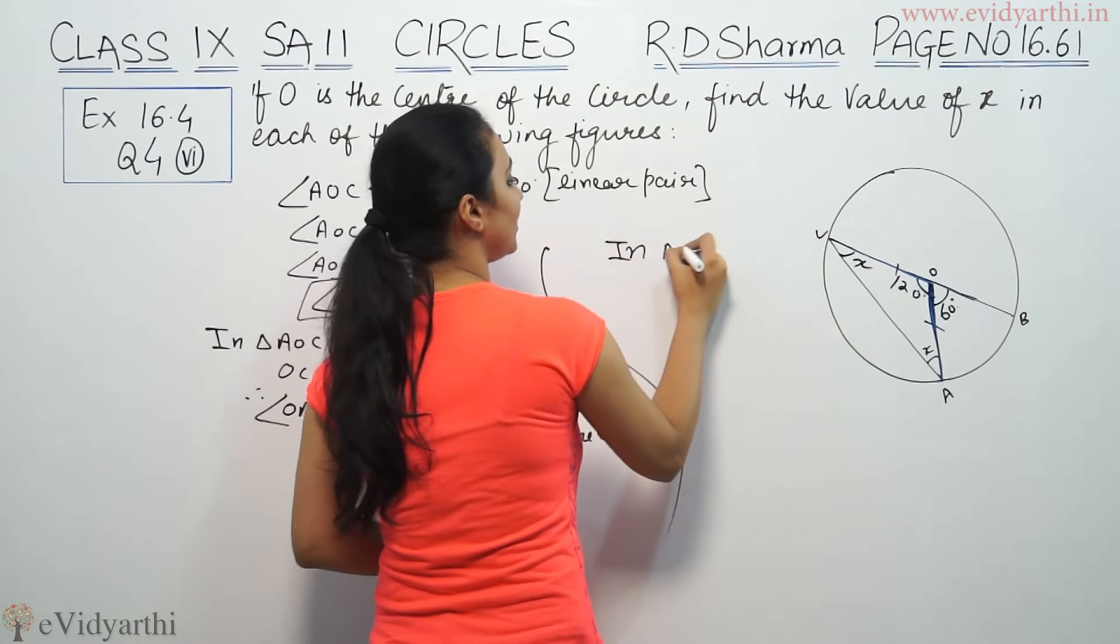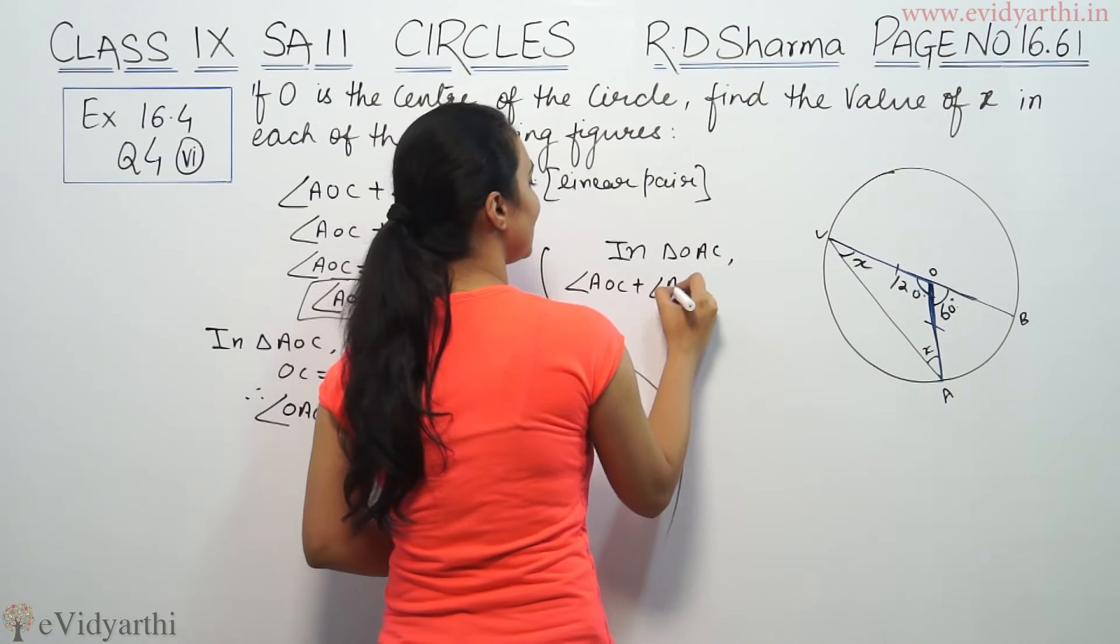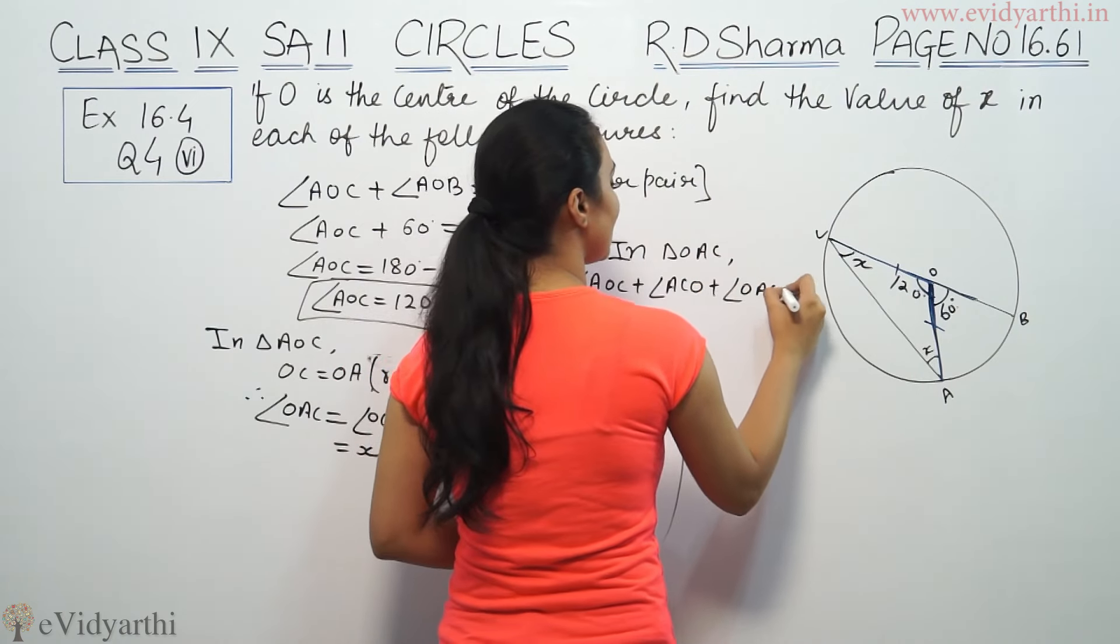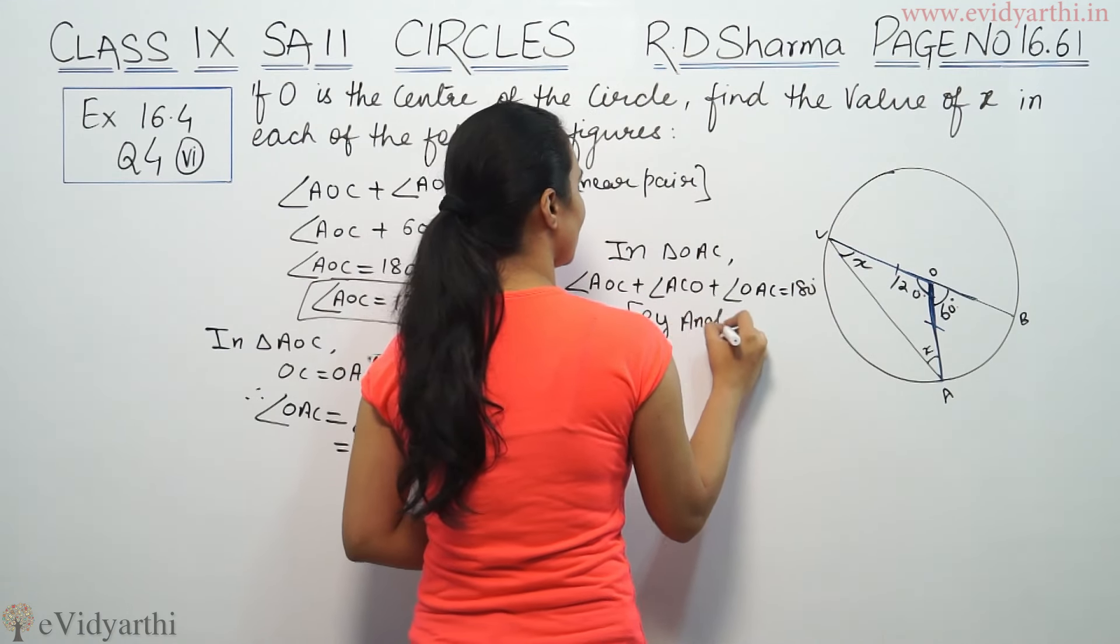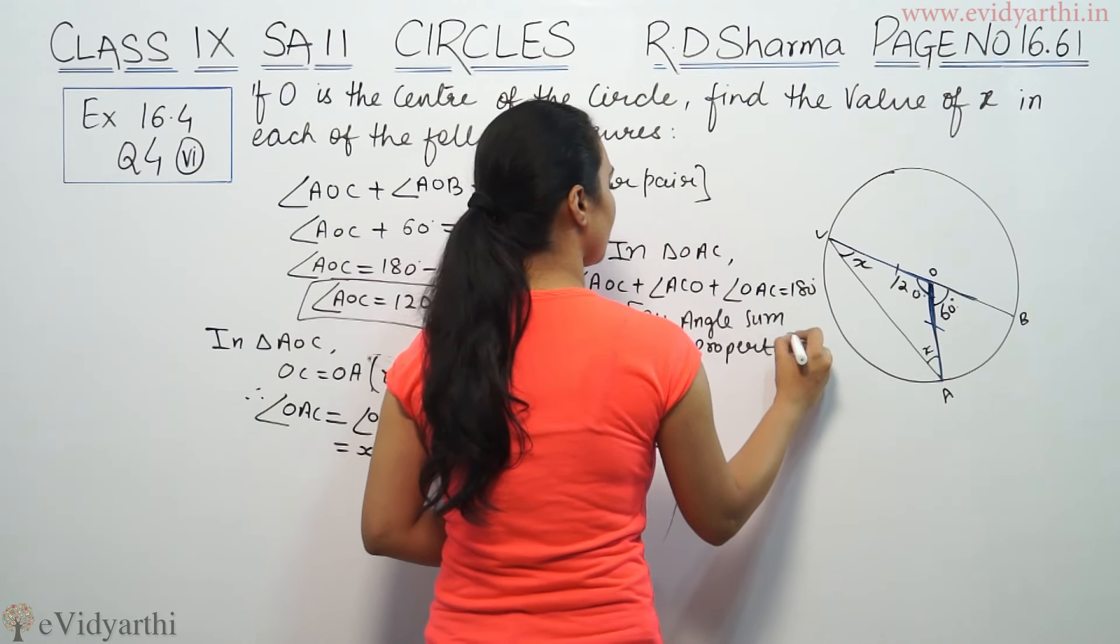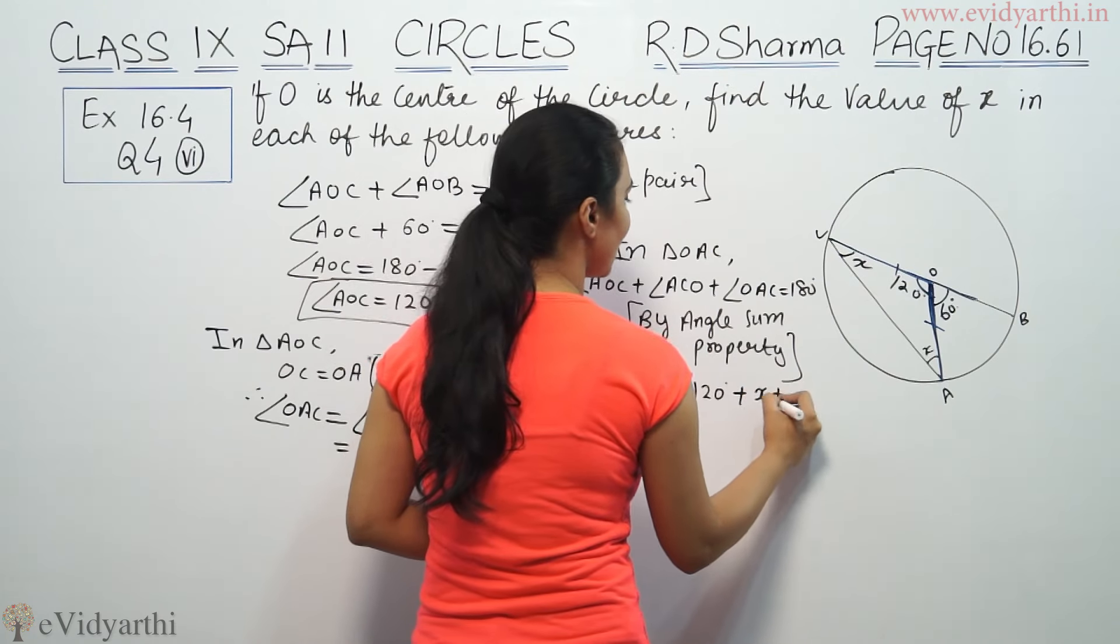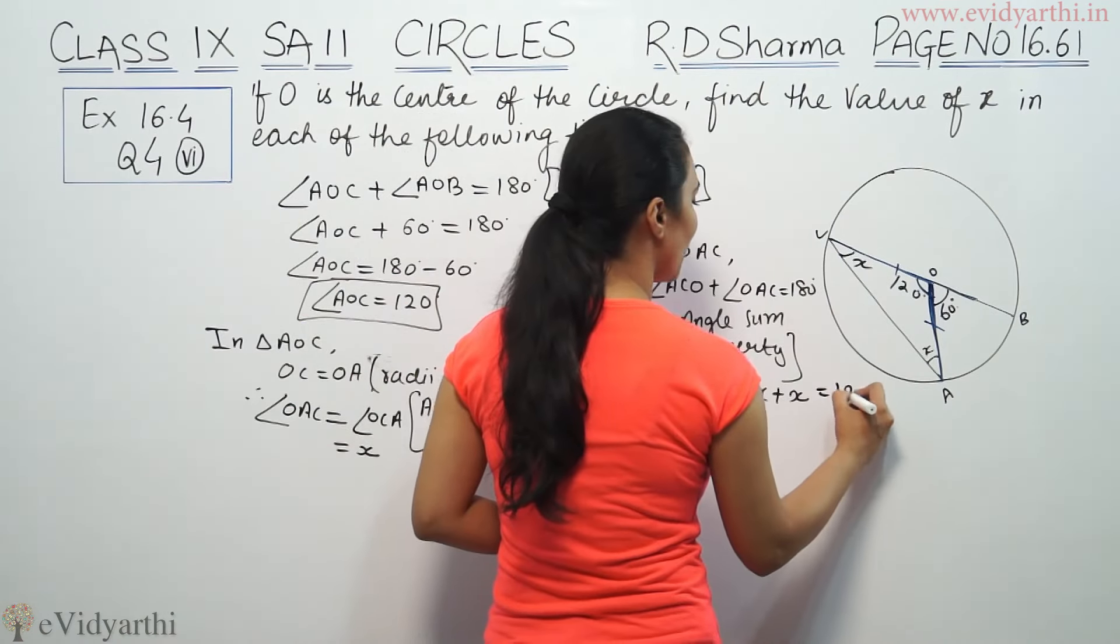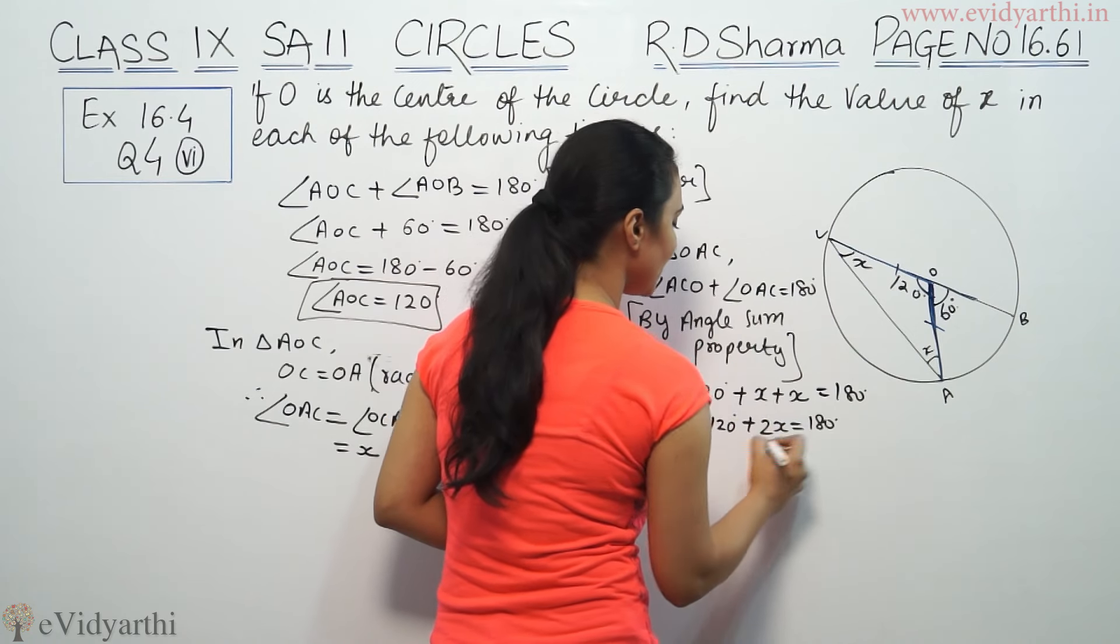In triangle OAC, angle AOC plus angle ACO plus angle OAC is equal to 180 degree by angle sum property. AOC is 120 degree. So 120 plus X plus X, which is 2X, equals 180 degree.